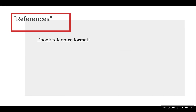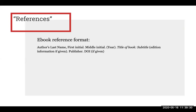So let's start with an e-book. Here is the APA reference format used for e-books. Notice that it begins with an author's last name, followed by a first initial, middle initial, year, title of the book, subtitle, edition information, publisher, and the DOI. These are each the pieces of information about the e-book that you will need to gather and then plug into the format following the same order and punctuation.